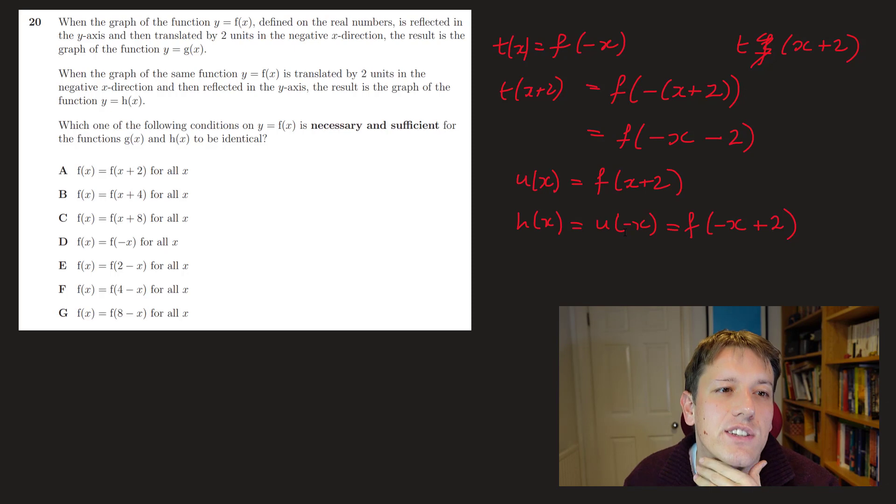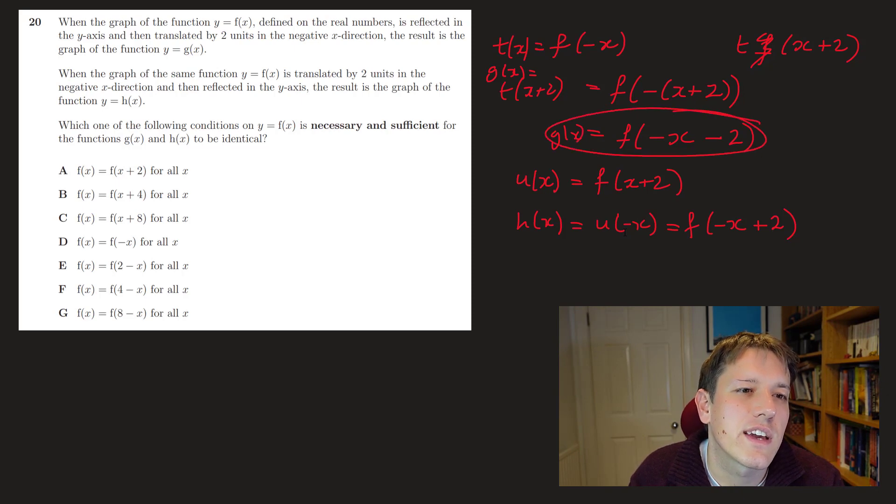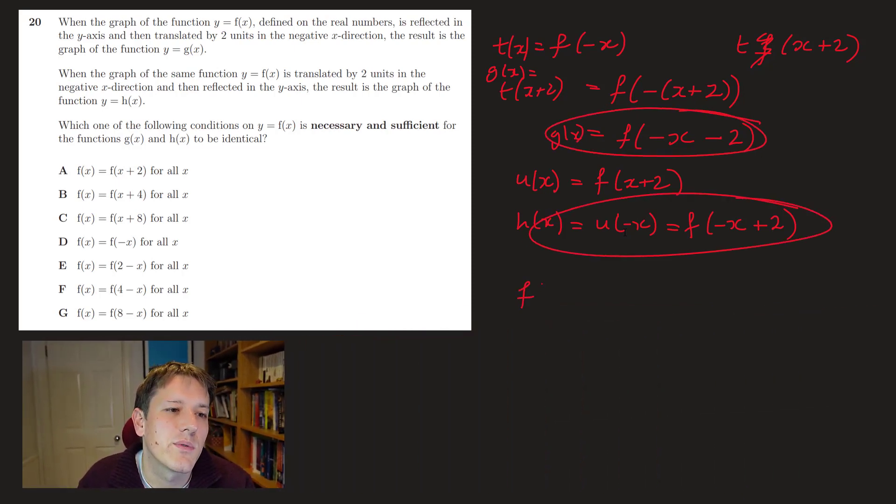And it says which of the conditions means that g of x and h of x are identical, so let's put my expressions for, oh I wrote t of x plus 2 here, that was right actually, but this one I'm calling g of x, so this is g of x, and this is h of x, so I want those to be the same, so I want f of minus x minus 2 to be f of minus x plus 2, they haven't been nice enough to give that as one of the conditions here, so I'm going to have to just rewrite these slightly, so if I make the same substitution into both here, it's not going to overall affect the function, it's just going to sort of change the naming of the coordinates if that makes sense.